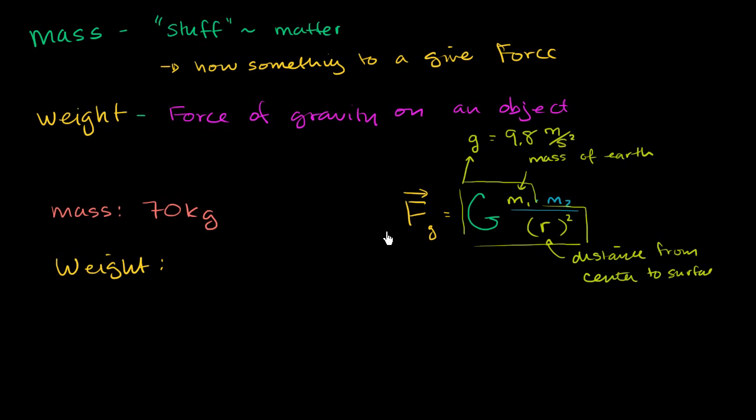So the force of gravity for something near the surface of the Earth is going to be this quantity right over here, times the mass, times its mass. So my weight on the surface of the Earth is this 9.8 meters per second squared, times my mass, times 70 kilograms.